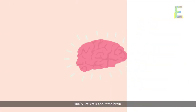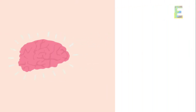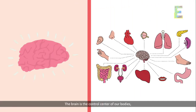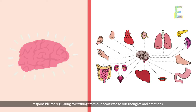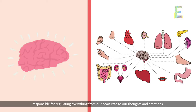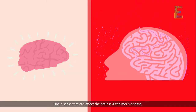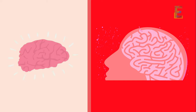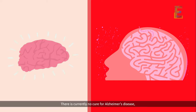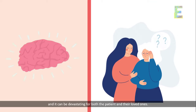Finally, let's talk about the brain. The brain is the control center of our bodies, responsible for regulating everything from our heart rate to our thoughts and emotions. One disease that can affect the brain is Alzheimer's disease, which is a degenerative disease that affects memory and cognitive function. There is currently no cure for Alzheimer's disease, and it can be devastating for both the patient and their loved ones.